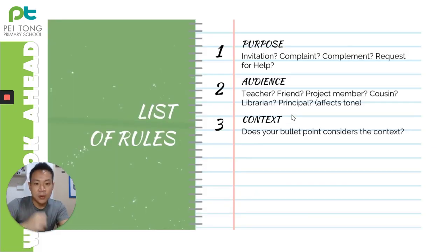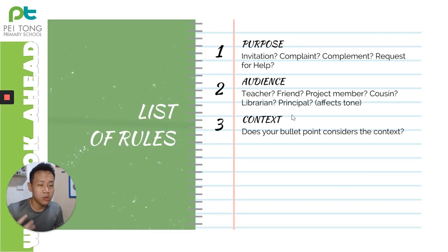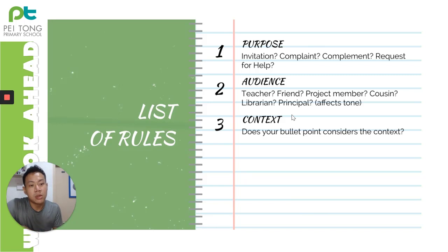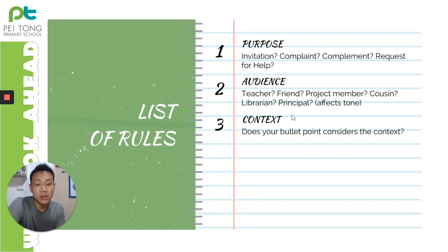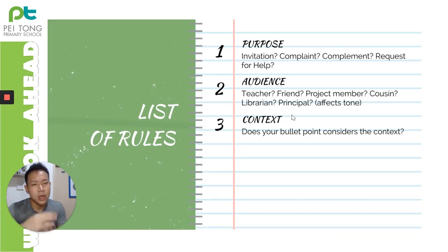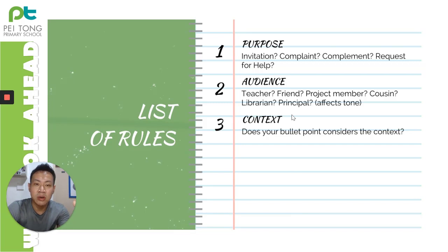Now for the rules. The purpose is very important — ask yourself: is it an invitation, a complaint, a compliment, or a request for help? Who are you writing to — a teacher, a friend, a project member, a cousin, a librarian, a principal? The audience affects the tone. Also, look carefully at the bullet points and consider the context. Do not just list all four or five points randomly — rearrange your sentences so they flow in a good sequence. For example, if inviting someone to a party, explain what the party is about before giving the date.